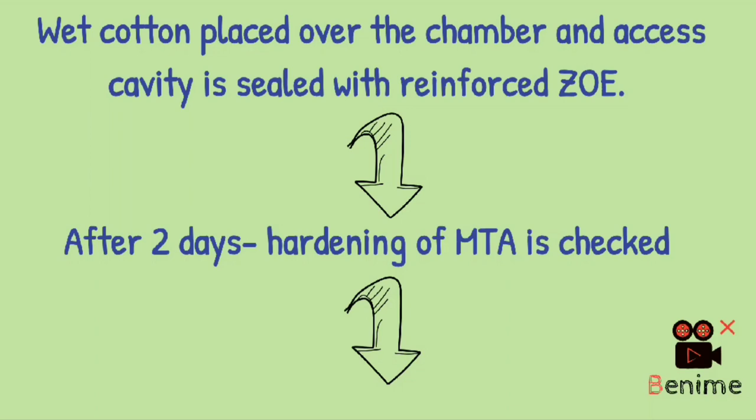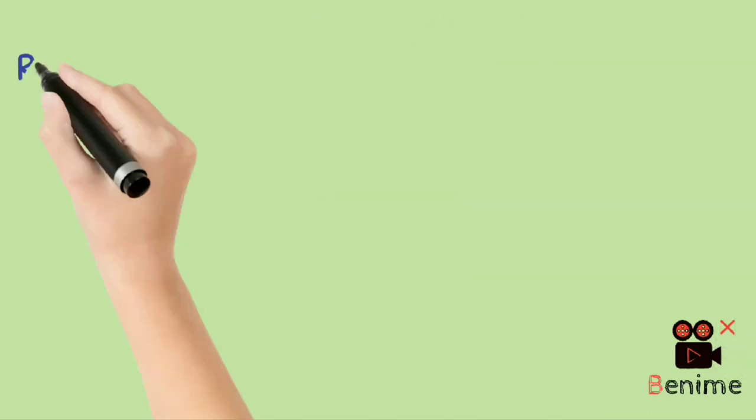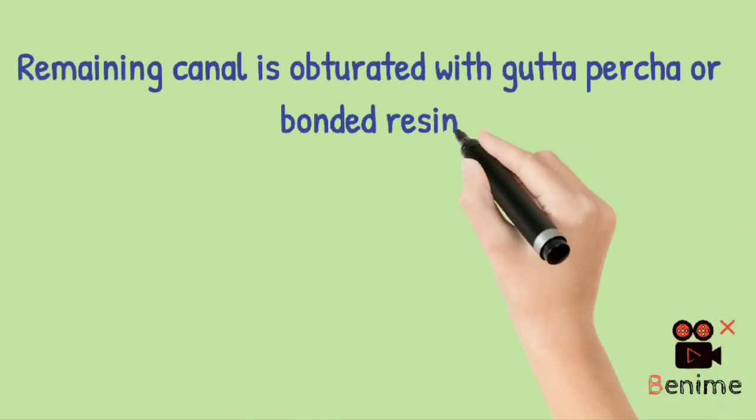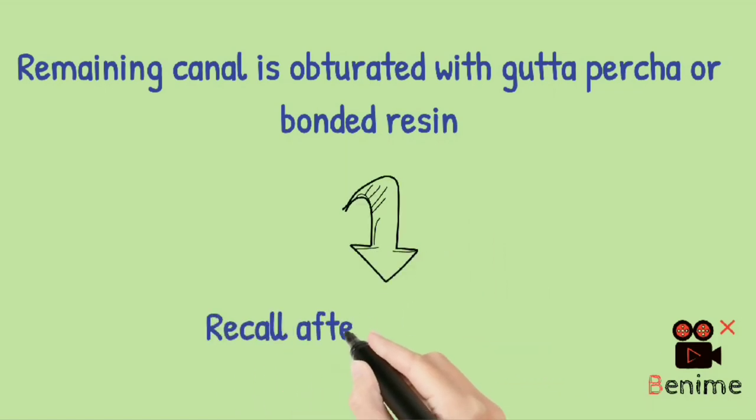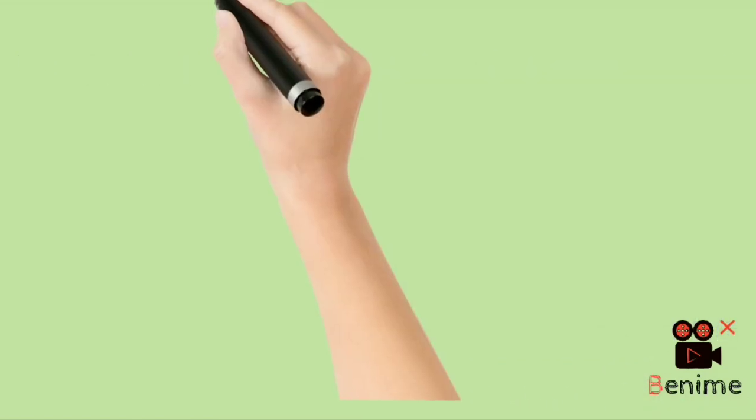Setting of MTA and apical barrier formation is checked after 2 days or 48 hours, and then obturate the canal using gutta-percha. Again, recall the patient after 3 to 6 months to check for the success or prognosis of the treatment.